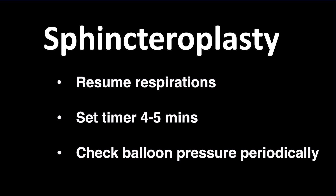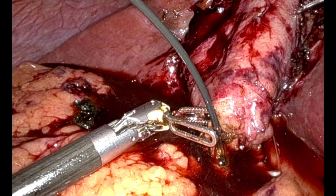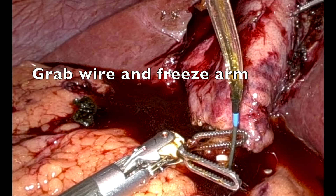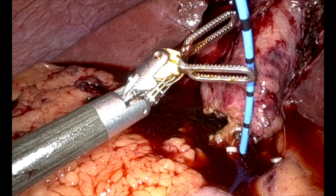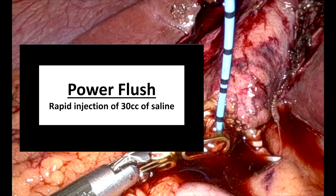Once the timer is complete, keep the wire in place and remove the balloon from the abdomen. Remember to always grab the wire when exchanging catheters and freeze the robotic arm so you do not lose your wire access. Over the wire, reinsert the ureteral stent and perform a power flush of saline followed by a cholangiogram with 50-50 contrast. Often you will see the stones or sludge roll down into the duodenum.